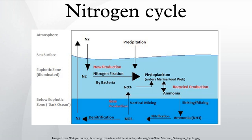Plants take up nitrogen from the soil by absorption through their roots in the form of either nitrate ions or ammonium ions. Most nitrogen obtained by terrestrial animals can be traced back to the eating of plants at some stage of the food chain. Plants can absorb nitrate or ammonium ions from the soil via their root hairs. If nitrate is absorbed, it is first reduced to nitrite ions and then ammonium ions for incorporation into amino acids, nucleic acids, and chlorophyll. In plants that have a symbiotic relationship with rhizobia, some nitrogen is assimilated in the form of ammonium ions directly from the nodules.